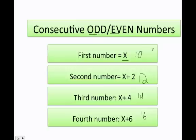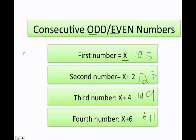What about odd numbers? Starting at 5: the next one is 5 plus 2, which is 7, then 9, then 11, and so on.